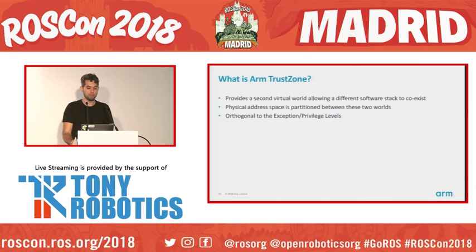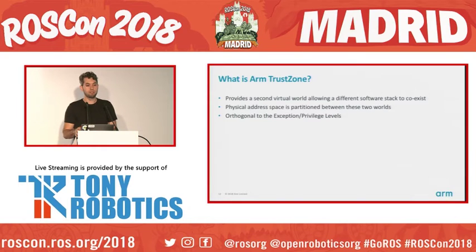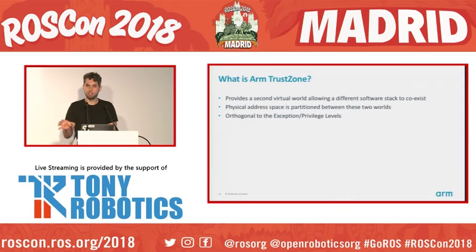Now I'm going through ARM TrustZone. The one-phrase description is that TrustZone is a built-in technology inside the CPU which creates two virtual environments. You can have two completely independent software stacks running. Conceptually, you always consider that one of them is secure and the other one is non-secure. The main way this is accomplished is that the physical address space is split — you can say which range of the physical address is attached to one of the two worlds. The security and non-security separation is completely orthogonal to the privileged levels.